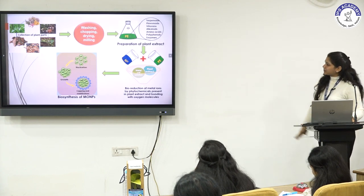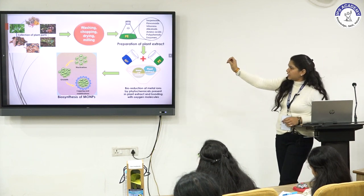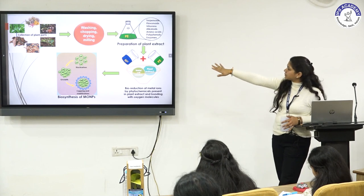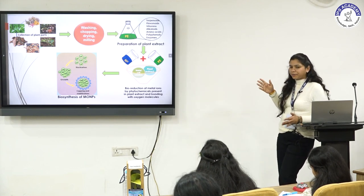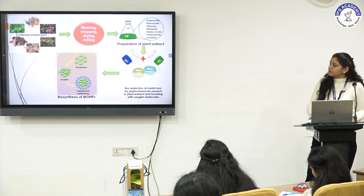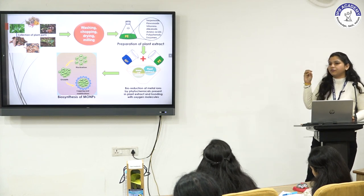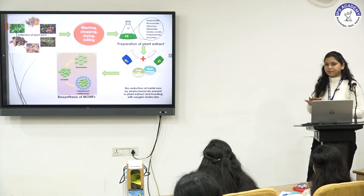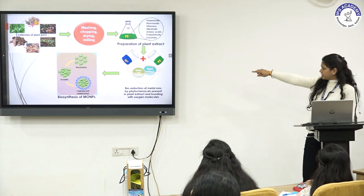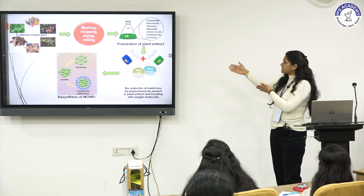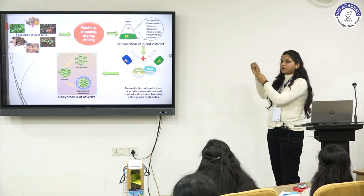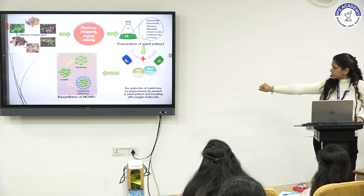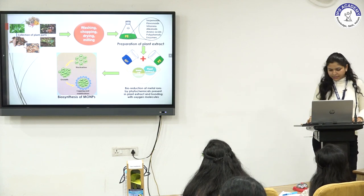The basic methodology for green synthesis involves collection of plant parts, followed by washing, chopping, drying, and milling. Then preparation of plant extract using various solvents — whether ethanol, methanol, or water — as per the reaction. The metal salt solution and plant extract are then mixed for the synthesis of nanoparticles. The last figure shows the biosynthesis of metal oxide nanoparticles.